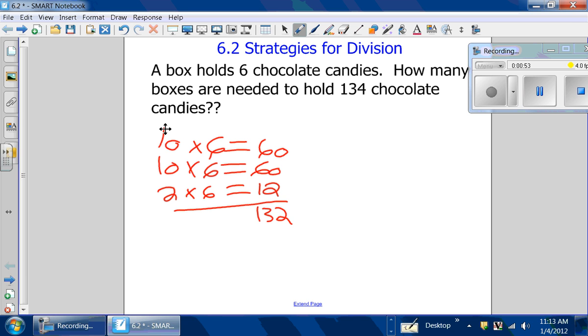And I knew it equals 132. But I need to get 134, so I added one more box. And that equals 10, 20, 22, 23 boxes.